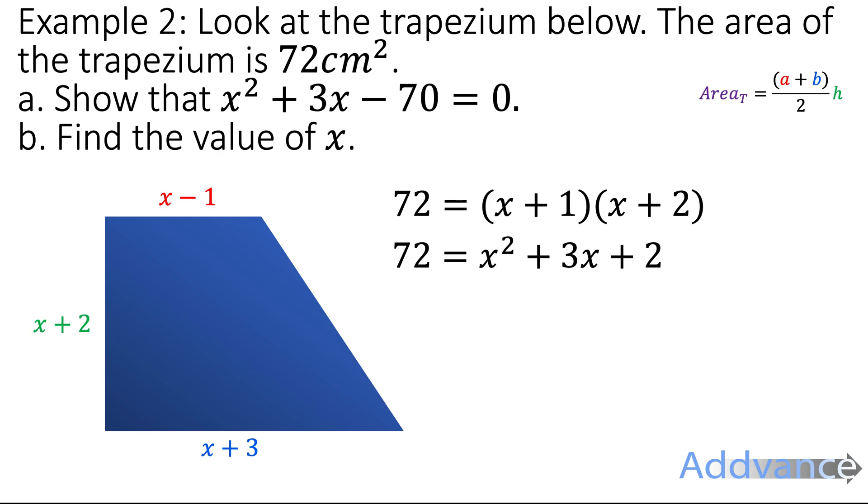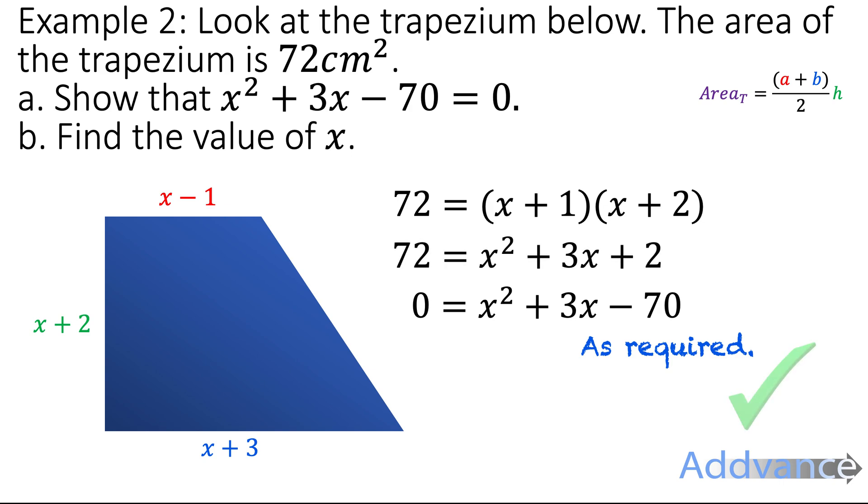If you don't know how to expand double brackets you need to watch my video on expanding brackets. I will link that at the top of the video now. Now we subtract 72 from both sides and we get the quadratic as we wanted in the question. So this was a show that question. All we needed to do was show all the working out steps that got us to x² + 3x - 70 = 0. And that is question A complete.